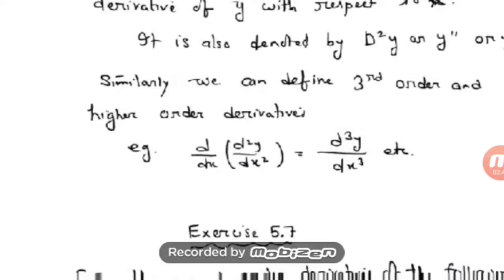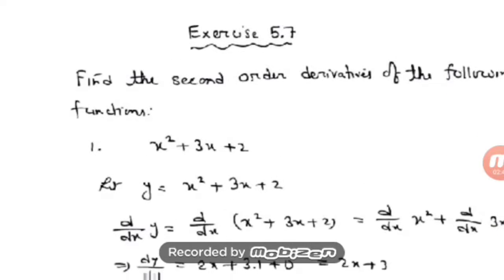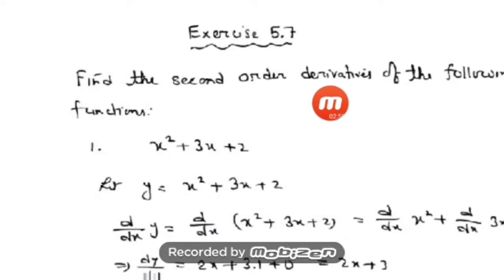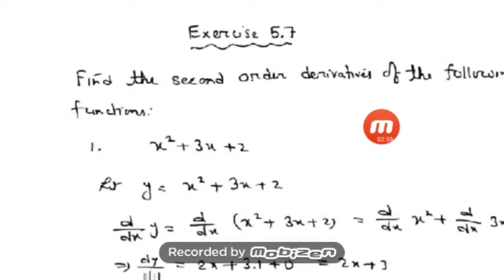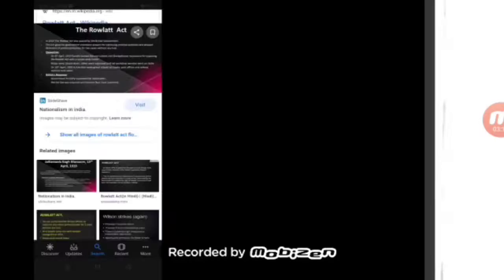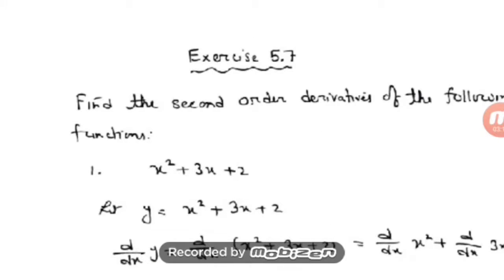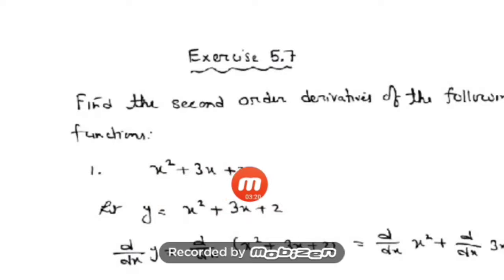Now let us go to Exercise 5.7, question number 1: find the second order derivative of the following functions. A few questions are given — you will recognize questions done earlier. All those answers, if differentiated again, will give the second order derivative. Question 1 is x² + 3x + 2, which is a polynomial function.